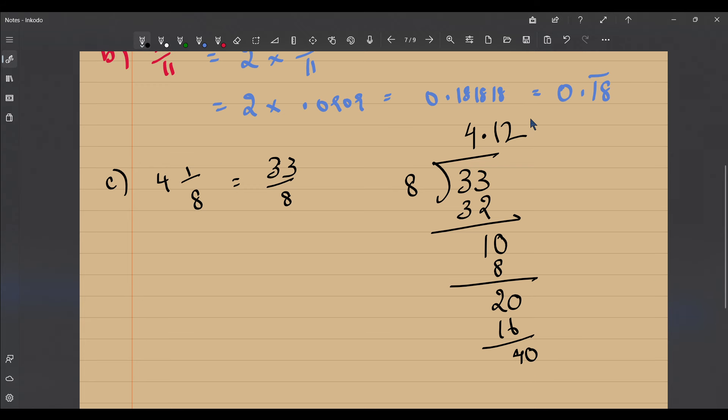8 fives of 40 and your division stops here because the remainder is 0. So ultimately what do we get? We get that 4 and 1 by 8 is equal to 4.125 - this is a terminating decimal, it doesn't recur, it terminates.